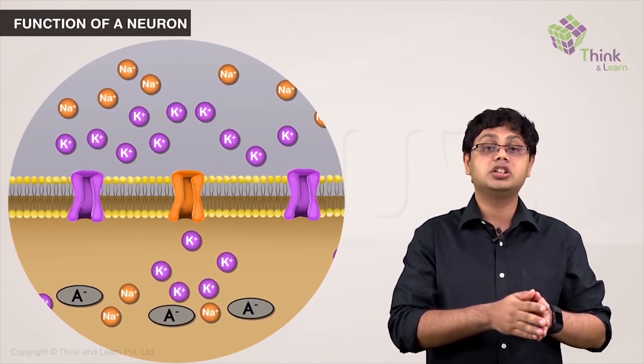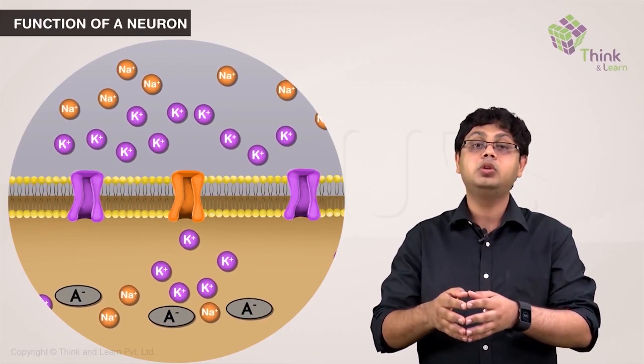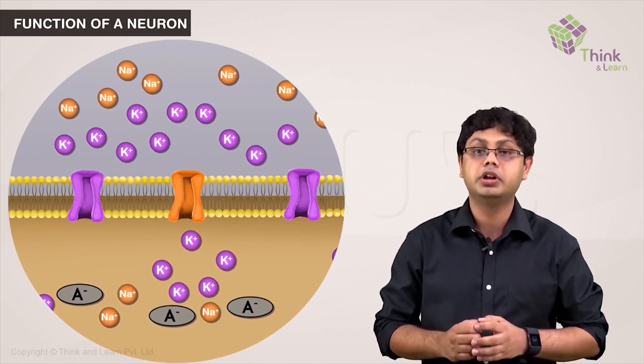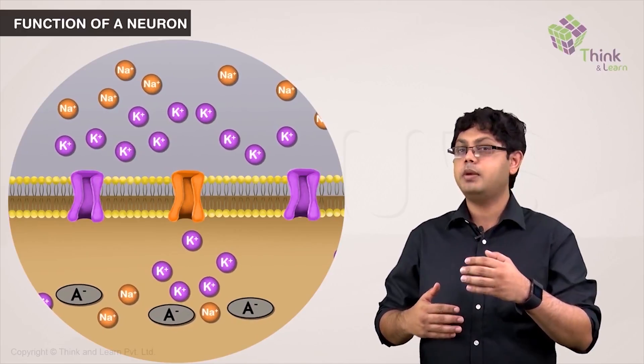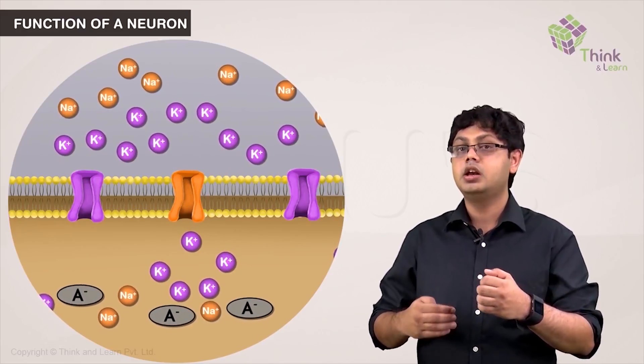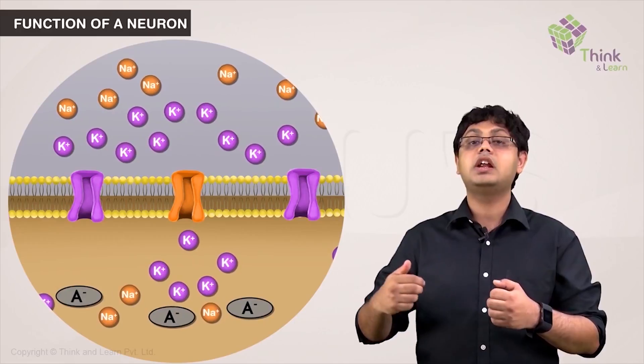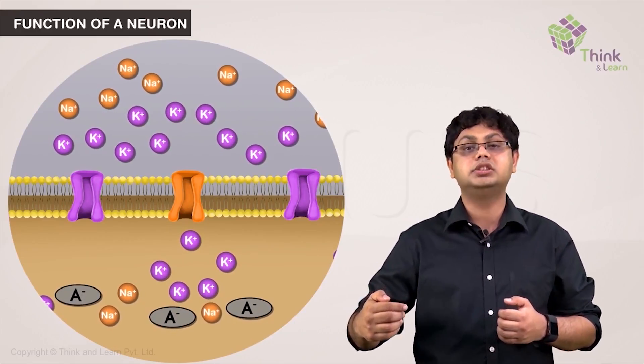And the K-plus ions do move in and out, staying in a state of electrochemical equilibrium, with the concentration gradient of K-plus ions attracting it outside being balanced by the negative electrical charge of the membrane attracting it back inside.